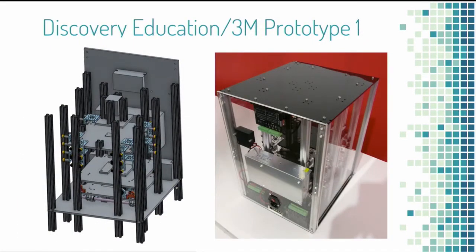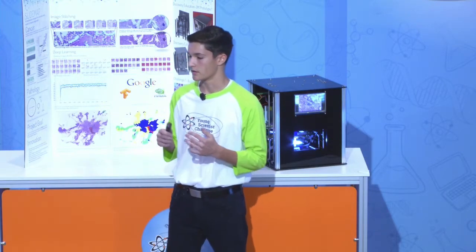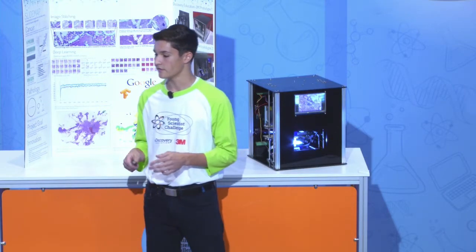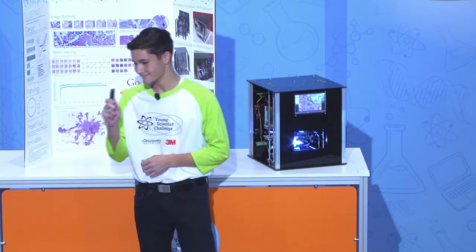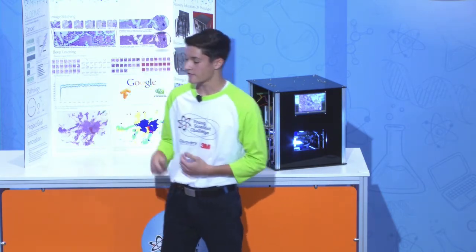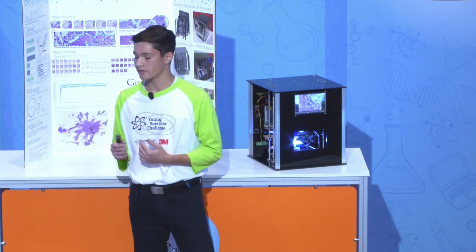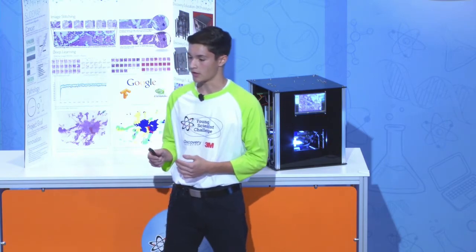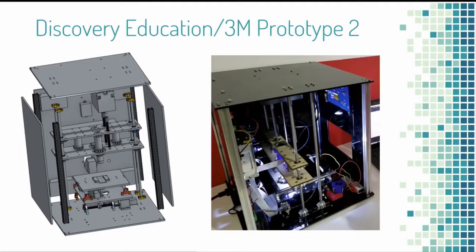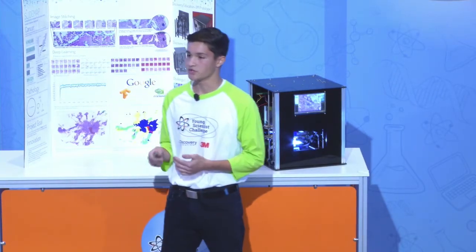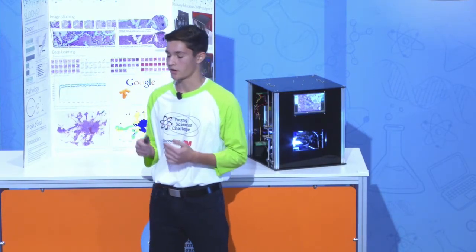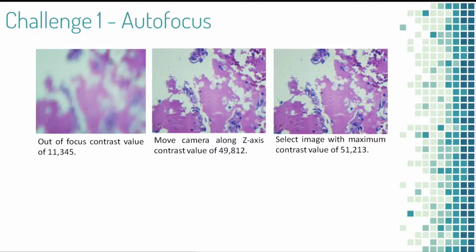The goal of my first 3M prototype was to minimize vibration, which was impacting my images. However, it was very stiff, but 3M silicon lubricant saved the day. It could still be improved, so I optimized it for a Raspberry Pi camera, which is low-cost, and optimized it for linear rails for much smoother movement. Originally, I used image contrast values to focus on my images, however it was unreliable.